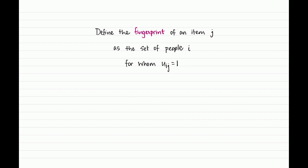The fingerprint of an item is the set of people who like that item. Many items can share the same fingerprint — they have different identities and may go into different bundles, but in terms of how they are perceived by people they share an identity. If you take a set of items with the same fingerprint and ask any person about them, that person will either reject all of them or accept all of them. This is exactly what having a common fingerprint means.